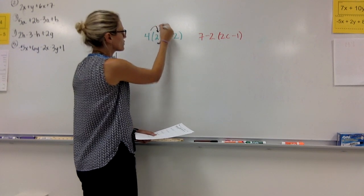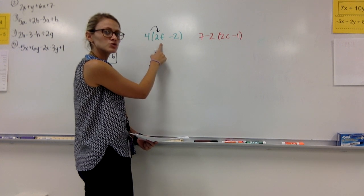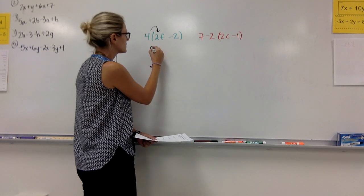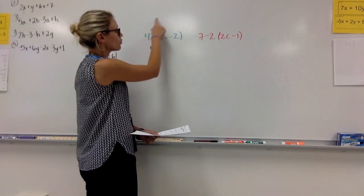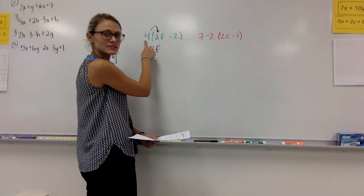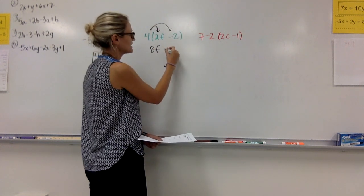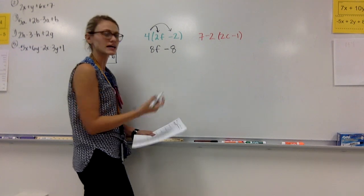So the 4 distributes to 2f. 4 times 2f is 8f. 4 times -2, a positive 4 times a negative 2 is a negative 8. We're done.